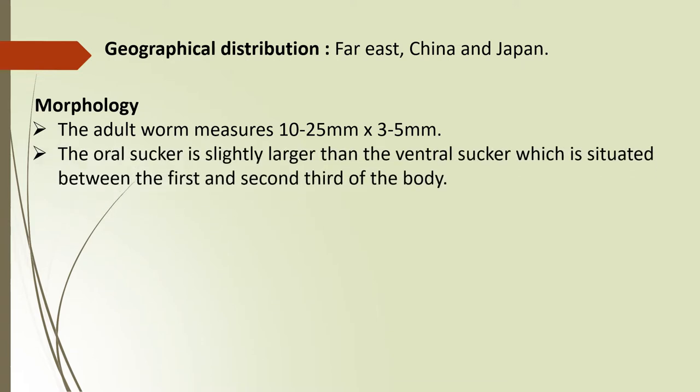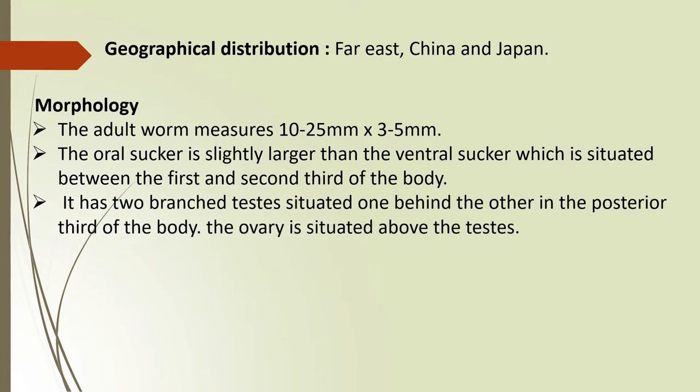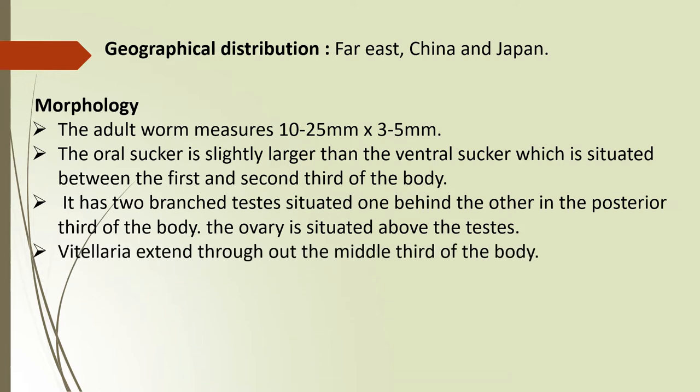It has an oral sucker which is slightly larger than the ventral sucker, situated between the first and second third of the body. It has two branched testes situated one behind the other in the posterior third of the body. The ovary is situated above the testes, and the vitellaria extends throughout the middle third of the body.